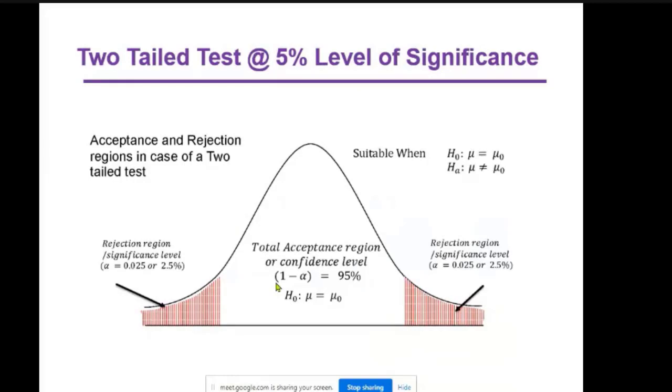Two-tailed test at 5% level of significance. Acceptance and rejection regions in case of a two-tailed test. This is the normal distribution curve. Five percent divided by two is 2.5%. This is the rejection region on each side, and this is the accepted region. The null hypothesis is population mean equals hypothetical mean. Alternative hypothesis is population mean is not equal to hypothetical mean. Here 95% is the confidence level, the accepted region.